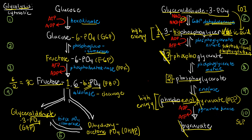If you only wanted to learn the 10 steps, you could stop here. But if your discussion of glycolysis involves deeper content connecting glycolysis with other pathways, carry on. One thing to address is the fact that we started with a hexose — a 6-carbon compound — but ended with a 3-carbon compound. Those missing 3 carbons cannot simply vanish.